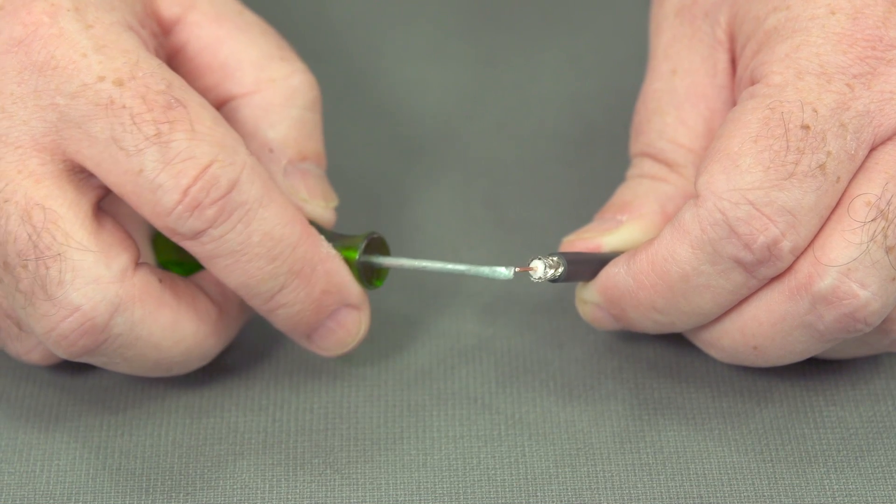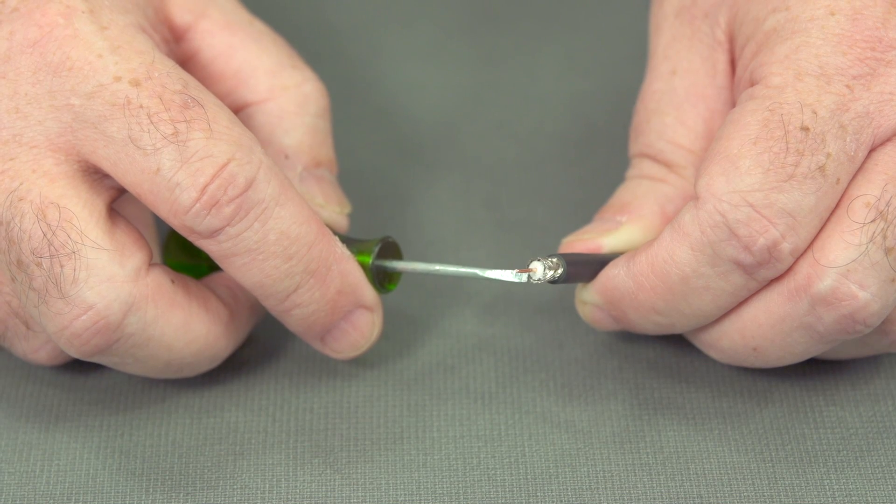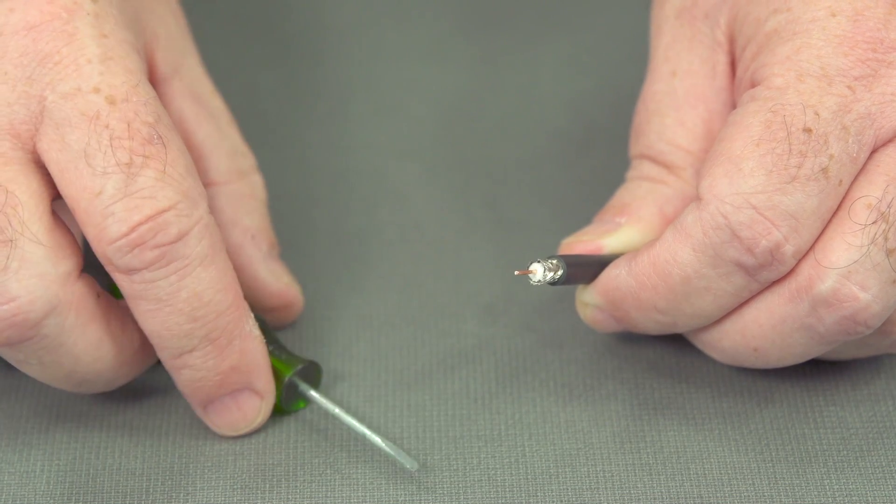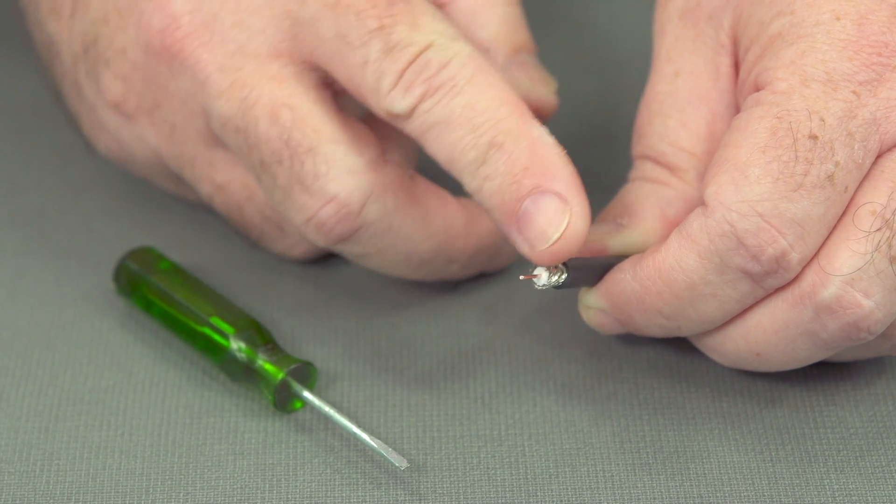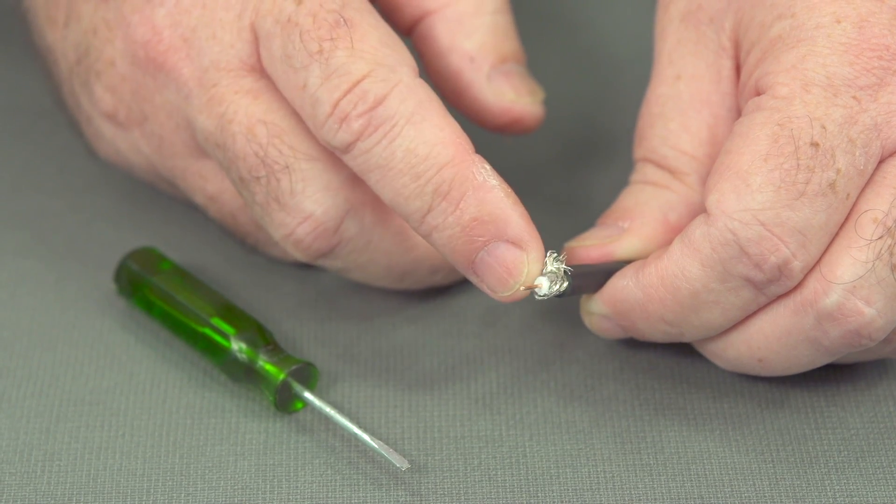If you do find it, that's generally an indication that your tool is getting a little bit dull. Let's fold back the braided shield in preparation to put on our connector.